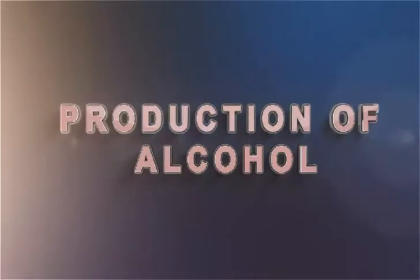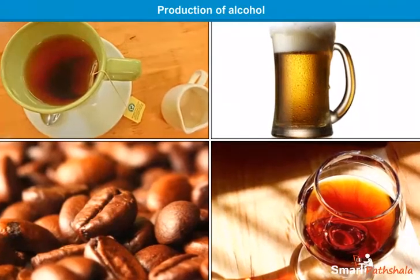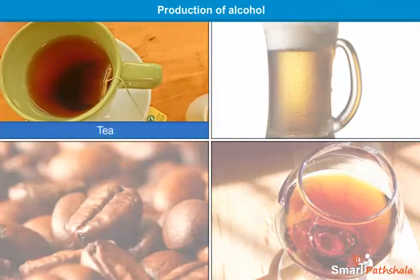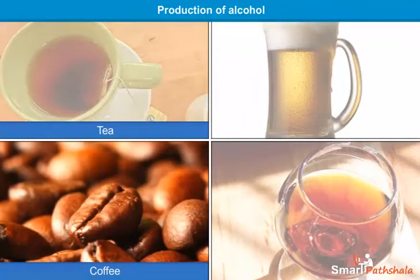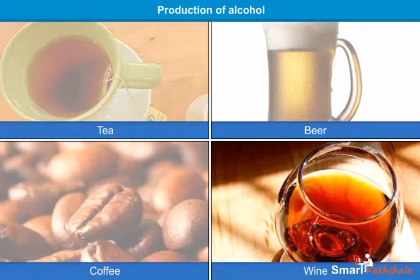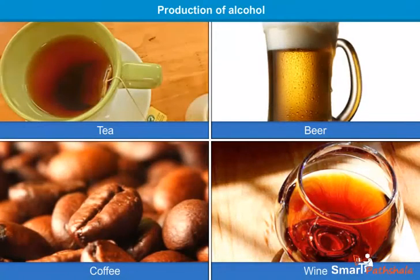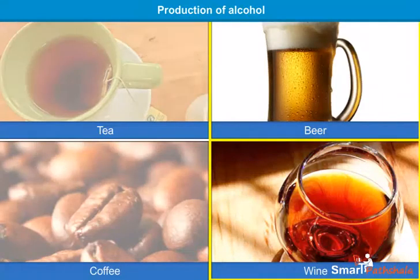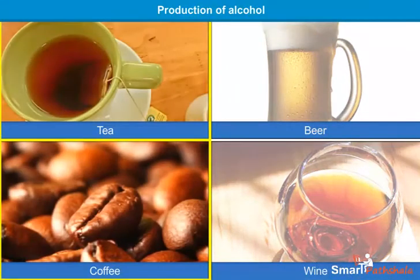Production of alcohol. Let us list out the various beverages like tea, coffee, beer, wine, etc. Based on the presence or absence of alcohol, beverages are classified into two types, namely alcoholic beverages and non-alcoholic beverages.